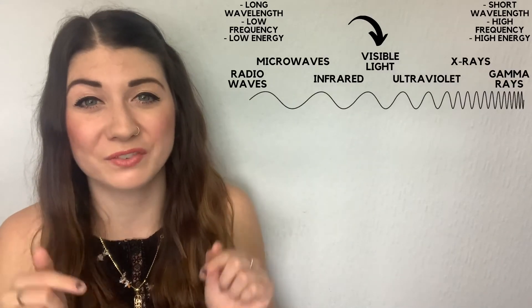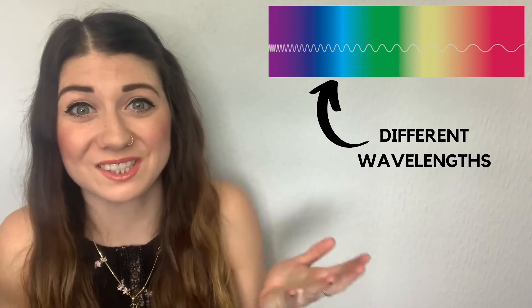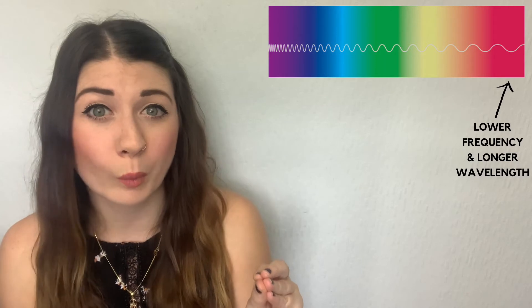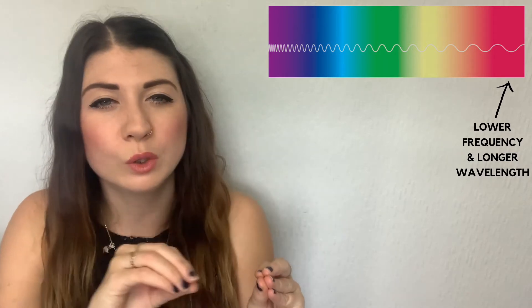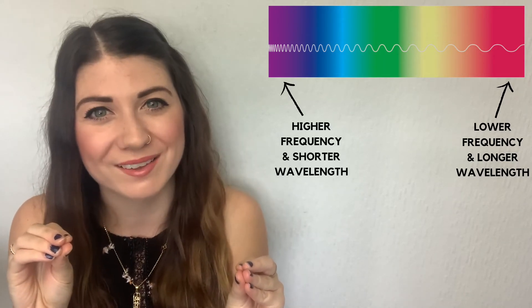Within visible light there is a whole spectrum of colours which are displayed whenever we see a rainbow. These different colours of visible light have different wavelengths too — starting with red, which has the lower frequency and longer wavelength, all the way up to violet, which has the higher frequency and the shorter wavelength.